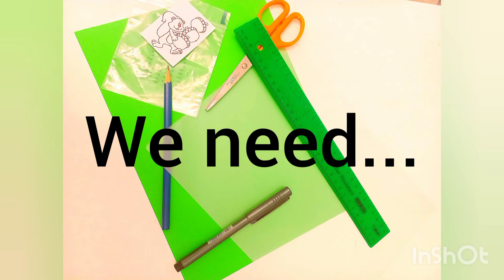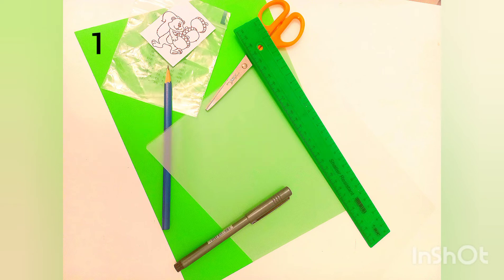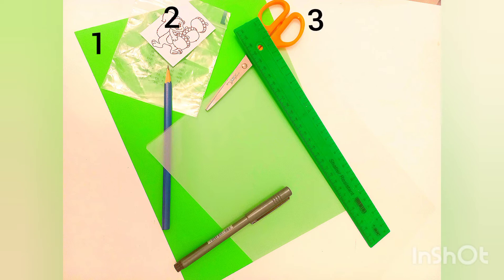Now let us see what we need. Please make sure you have colored cardboard, a picture for your puzzle, scissors, a ruler, a pencil, and a black pen for marking each piece.